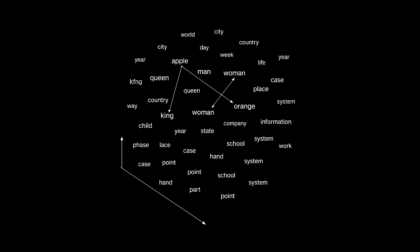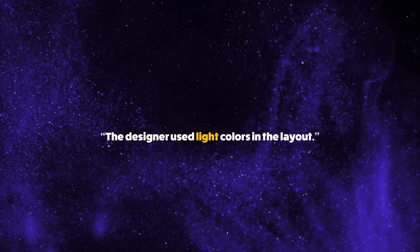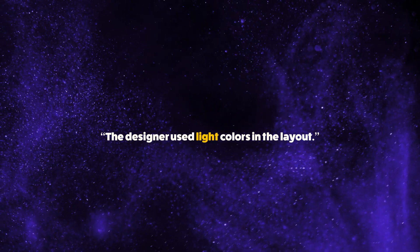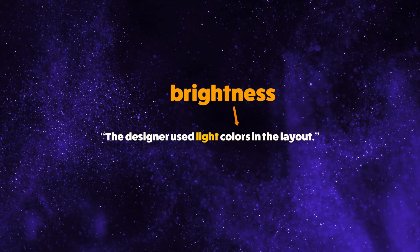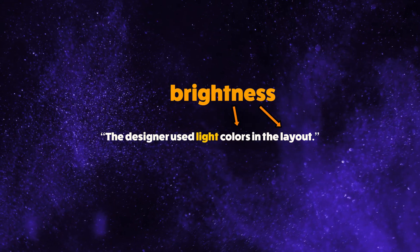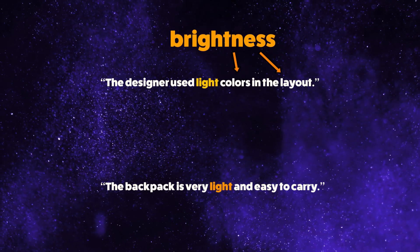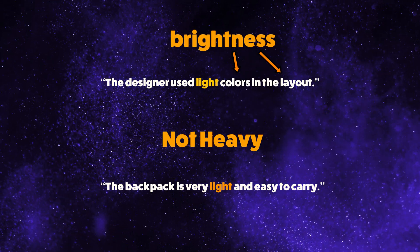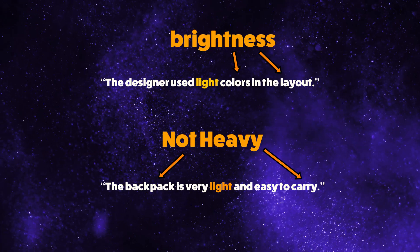LLMs don't understand words in isolation — instead, they consider the tokens around them. For example, in 'the designer used light colors in the layout,' 'light' is interpreted as brightness because of nearby tokens like 'color' and 'layout.' But in 'the backpack is very light and easy to carry,' 'light' means not heavy, thanks to context words like 'backpack' and 'carry.'